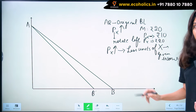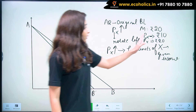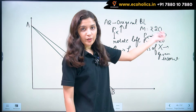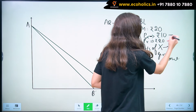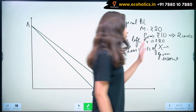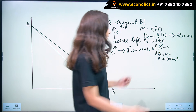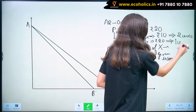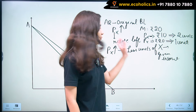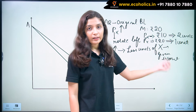So what happens in this case is: initially, when price of X is Rs. 10, with his given income of Rs. 20, he can buy 2 units of X. But when price of X increases to Rs. 20, he can now buy only 1 unit of X. This means that as the price of X rises, a consumer buys fewer units of X with his given income.